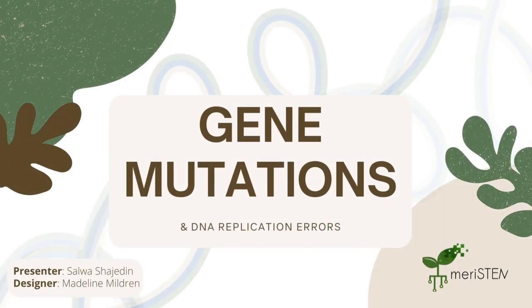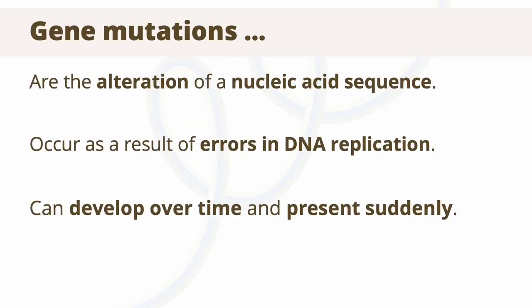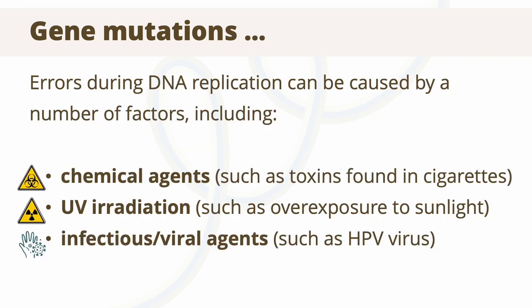DNA replication is by no means perfect, and many errors can arise throughout this complex process. Gene mutations occur when the sequence of nucleic acids are altered in some way, which may or may not change the regular functioning of the protein. Mutations develop over time, especially with sustained exposure to environmental factors including chemical agents such as cigarette toxins, UV radiation such as sun exposure, and infectious agents such as the HPV virus.